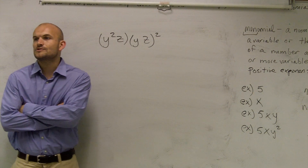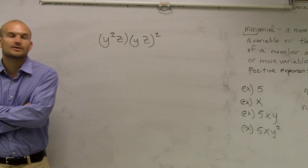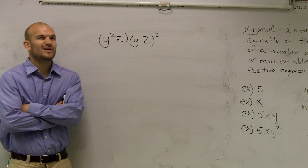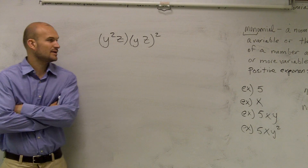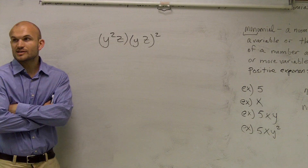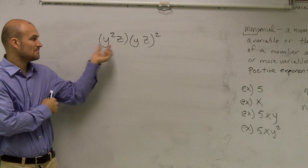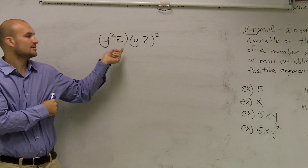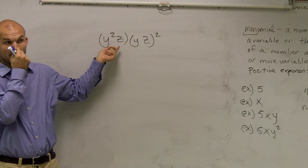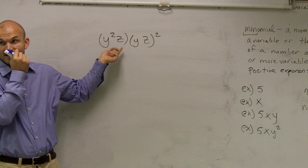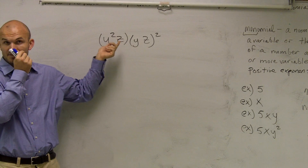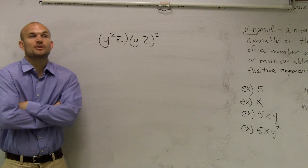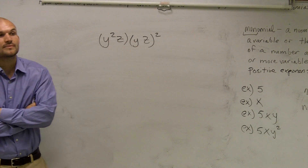So guys, one of the first problems we had to look at was we have an operation. The first thing we notice is that this is a monomial — two variables multiplied by each other with positive exponents. So these are a monomial multiplied by a monomial.